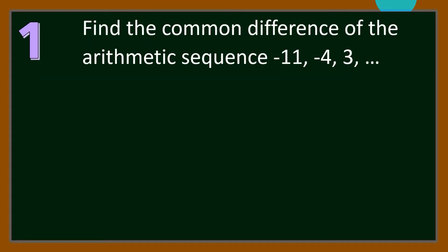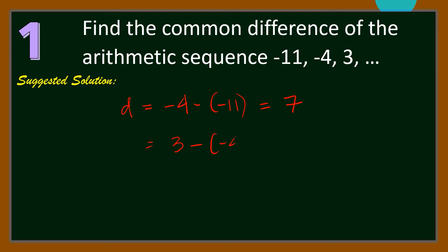Question number 1: Find the common difference of the arithmetic sequence negative 11, negative 4, 3, and the pattern continues. To get the common difference, we get the difference between any two consecutive terms, such as negative 4 and negative 11. Here we have D is equal to 7. Also, we can use 3 and negative 4; the difference is 7. Hence, the common difference is 7.